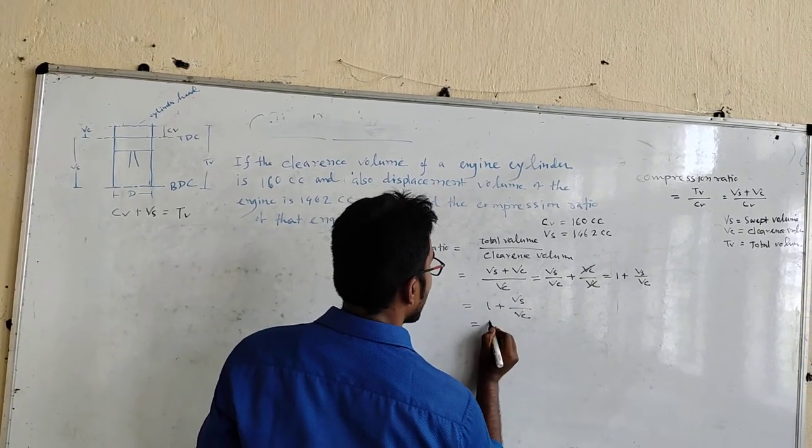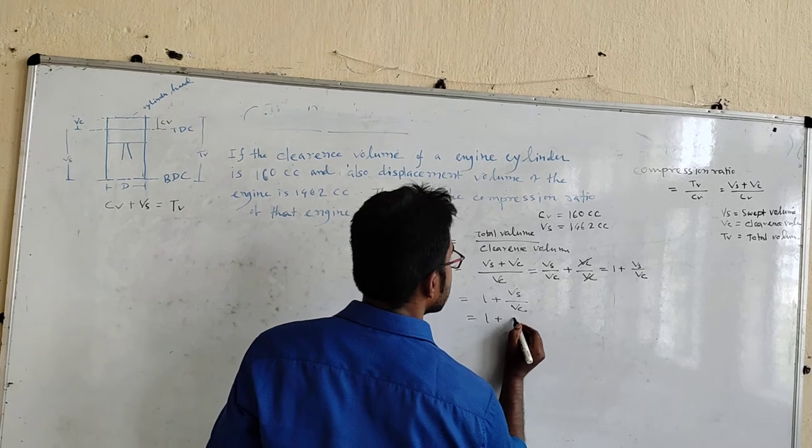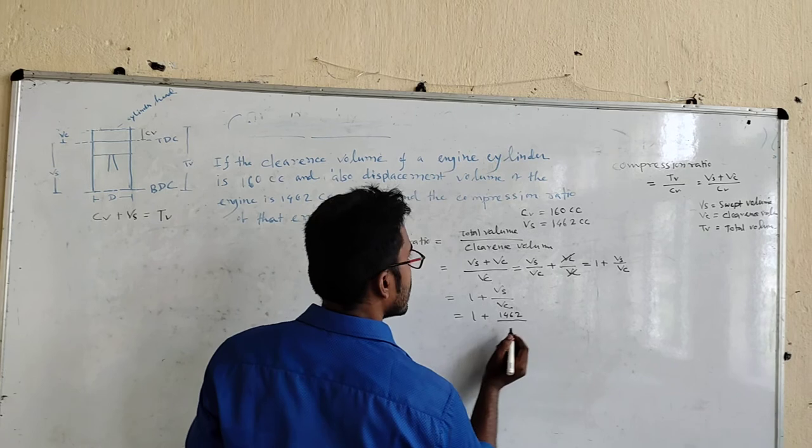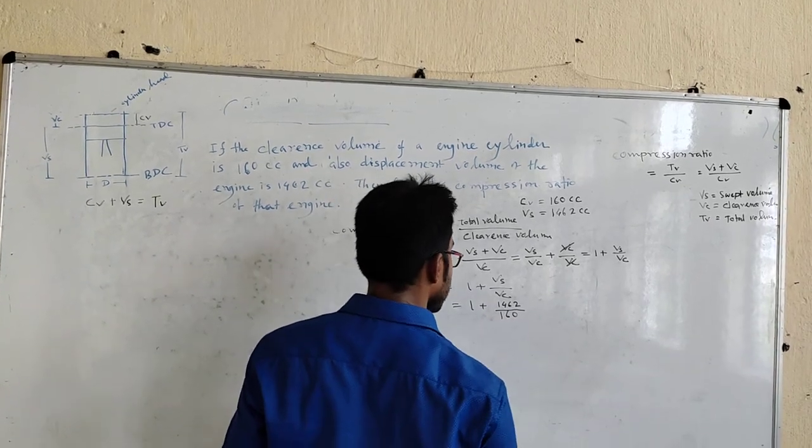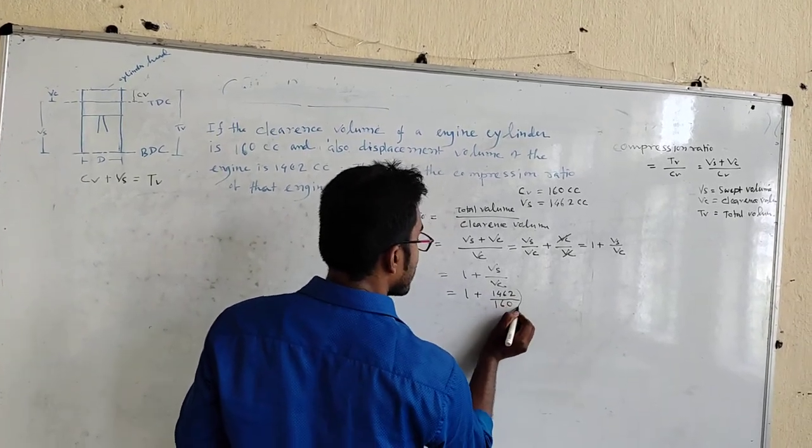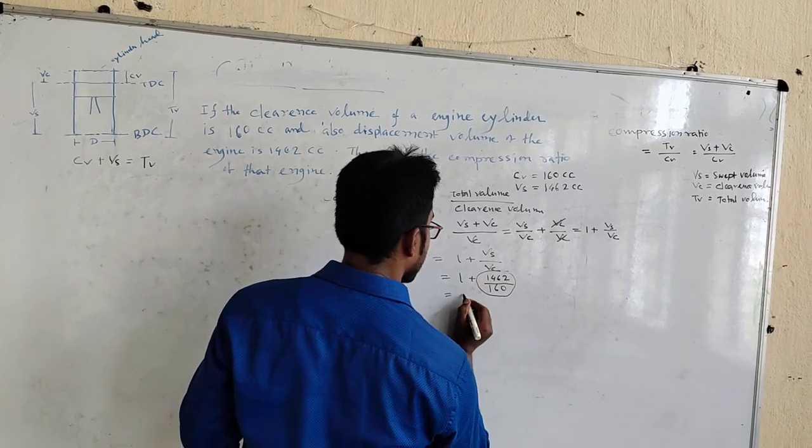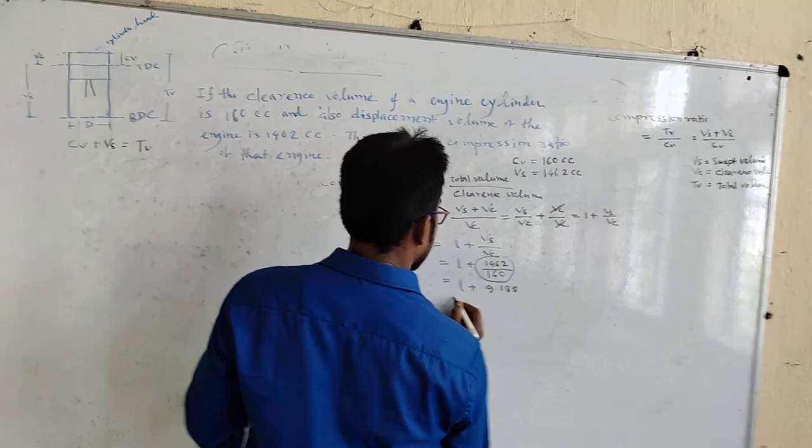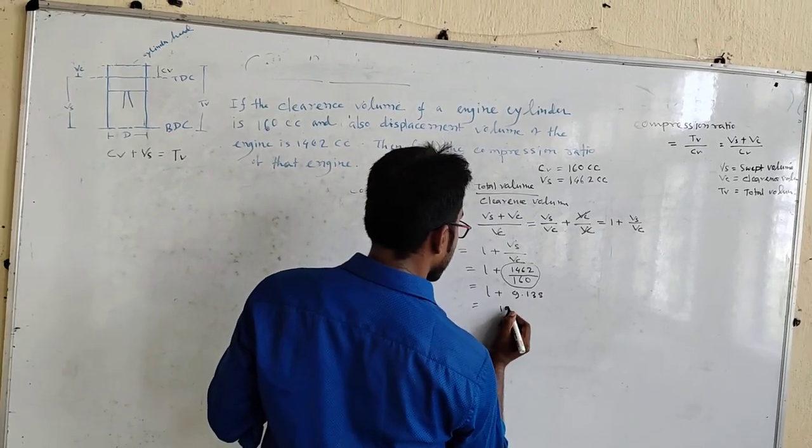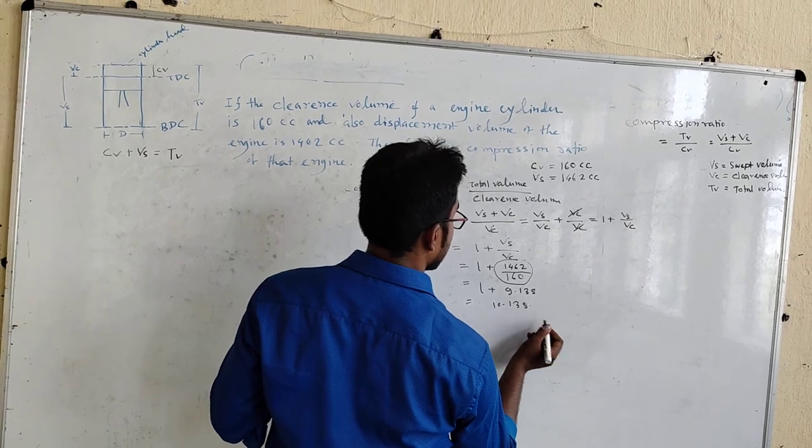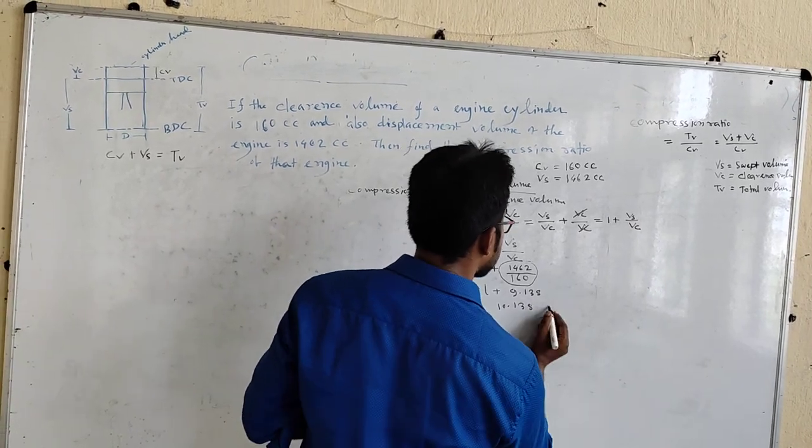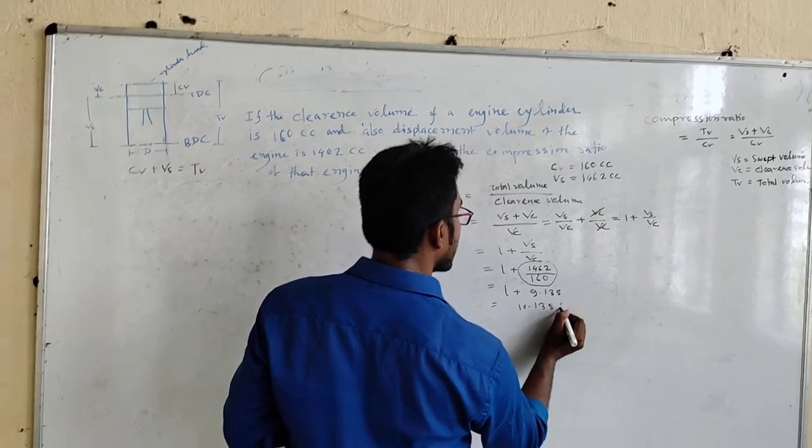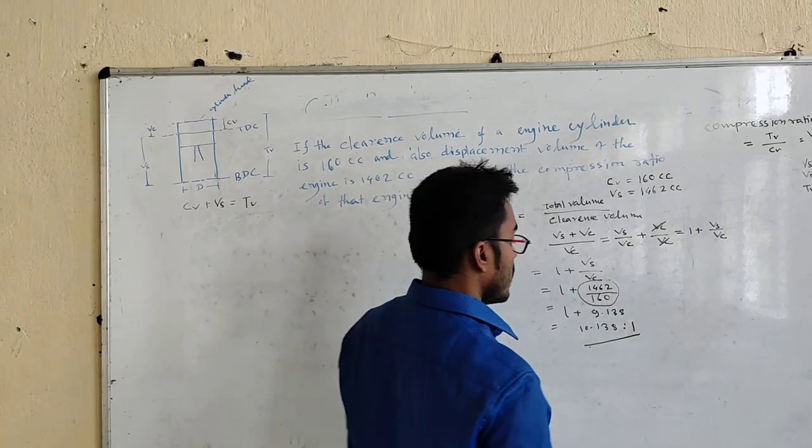This is equal to 1 plus 1462 by 160, so this is equal to 1 plus 9.138. This equals 10.138.